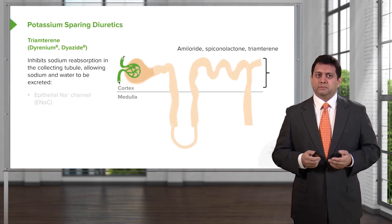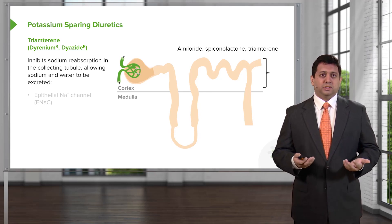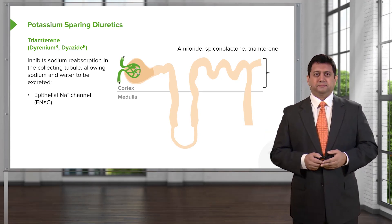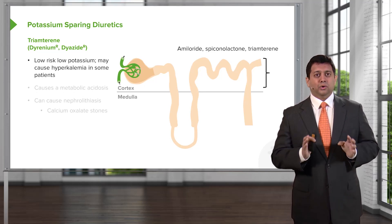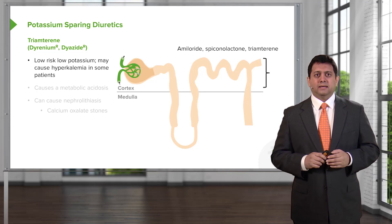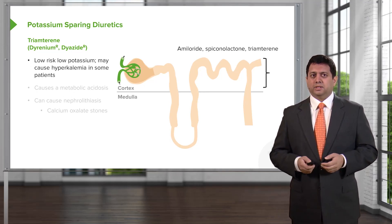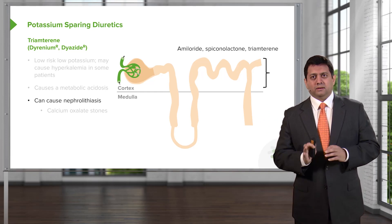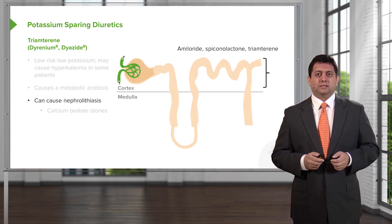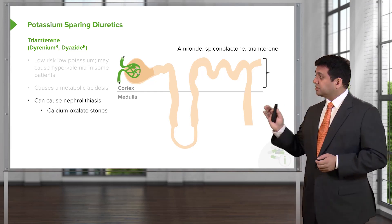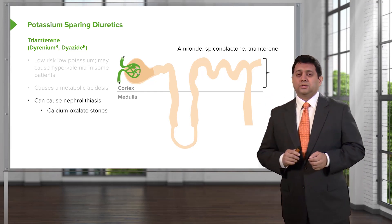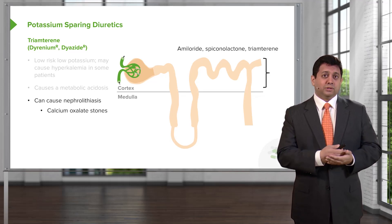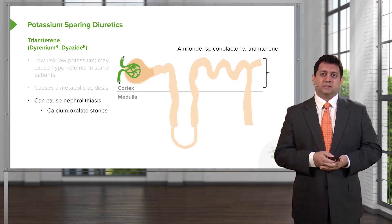Triamterene is another potassium-sparing diuretic. It inhibits sodium reabsorption in the collecting tubule and works through the ENaC channel. It has a low risk of hypokalemia but can cause hyperkalemia in some patients, and it also causes a metabolic acidosis. One important thing to be aware of is that triamterene can cause renal stones or nephrolithiasis — specifically calcium oxalate stones. That's another good exam question: triamterene causes calcium oxalate renal stones.